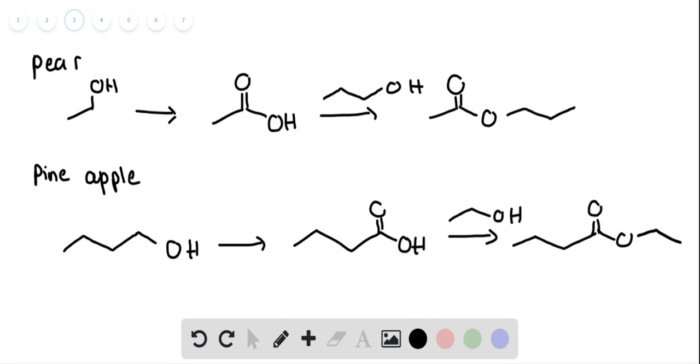Similarly, for pear, it will start with ethanol, sodium chromate, sulfuric acid, coupling with propanol, sulfuric acid.